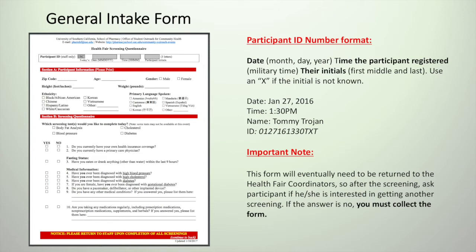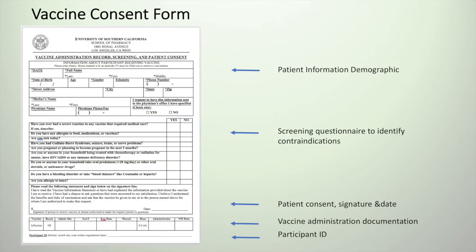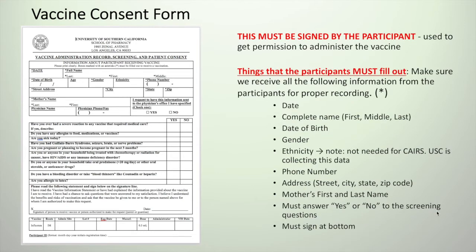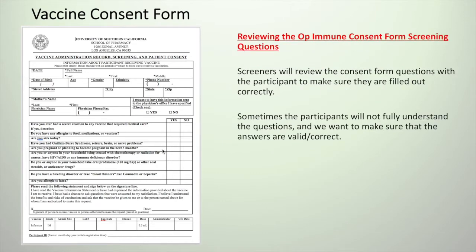Another registration form they should have is a vaccine consent form. Here on the screen is how it should look and a few labels so you know what to look out for. It is very important that this form is signed. Things that the patient must have filled out are marked by a star, most of them at the top section. They also need to fill out the middle section which has questions marked with yes or no. You should review these questions when the patient arrives at your station so they really understand what we are asking of them.